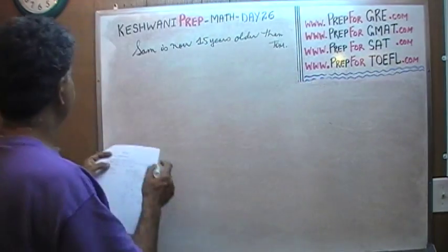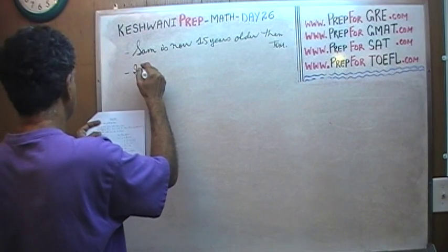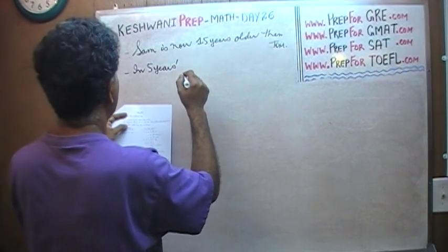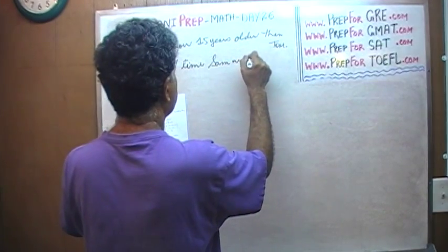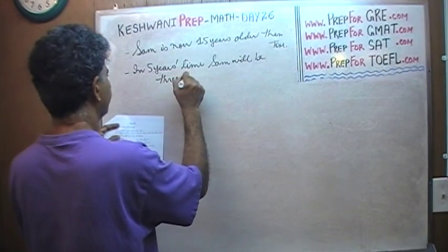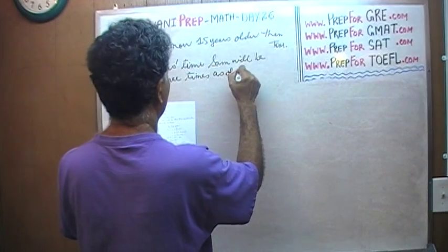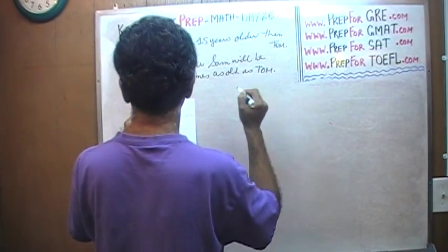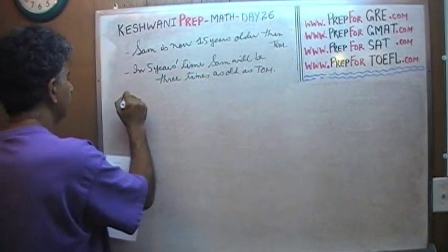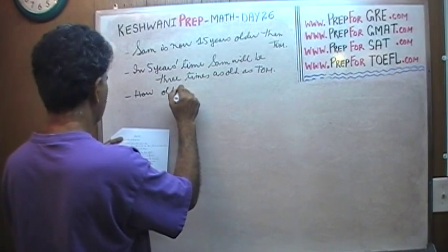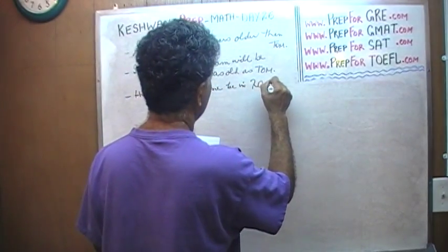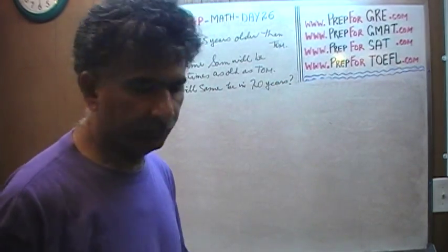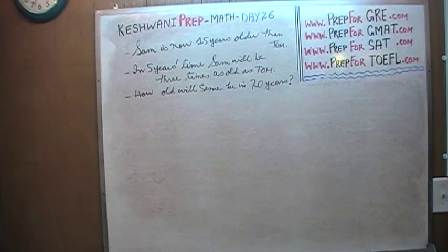In five years time, Sam will be three times as old as Tom. That's number two. The question simply is: how old will Sam be in twenty years? That's all there is.